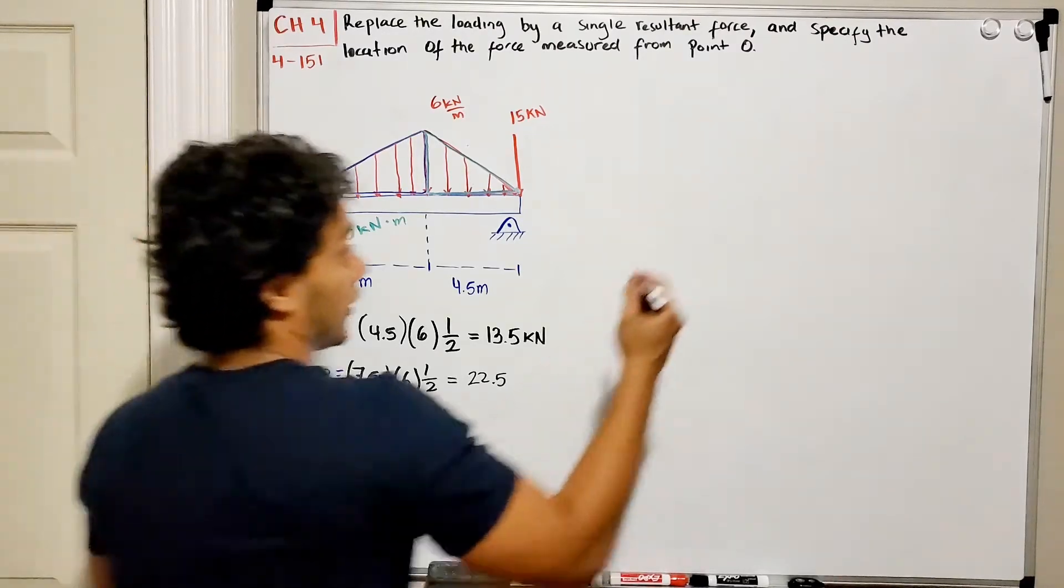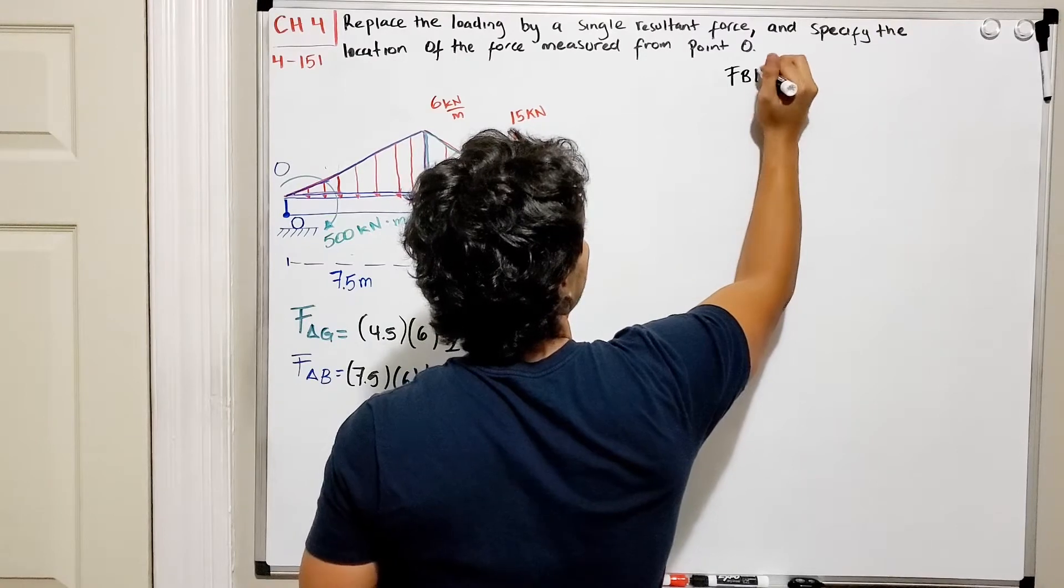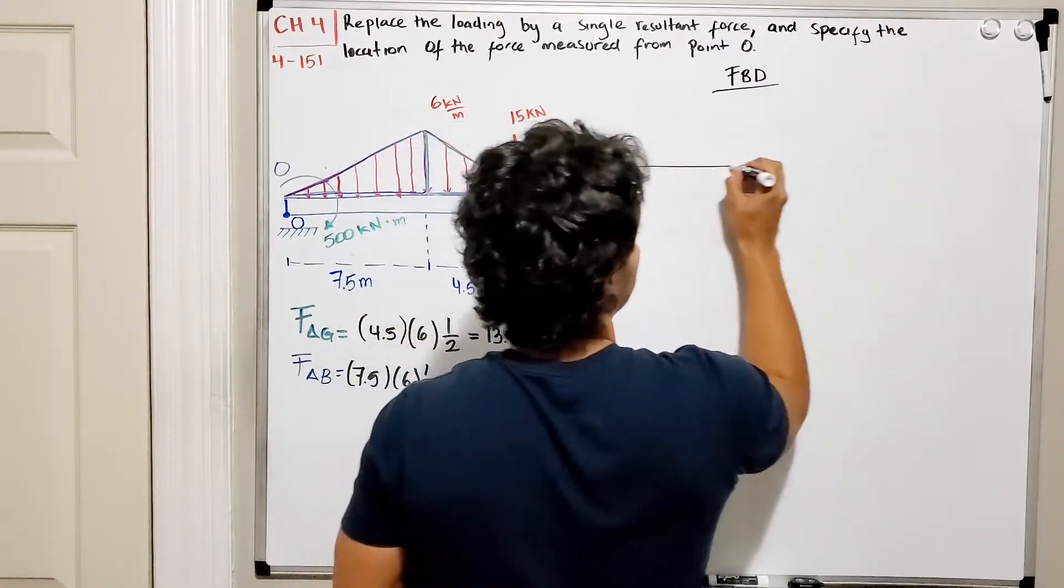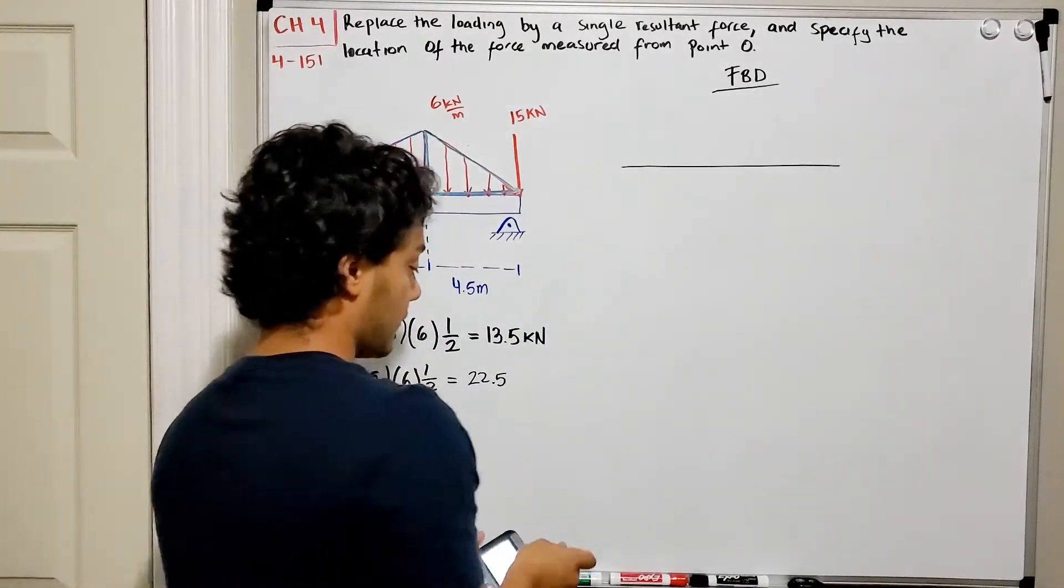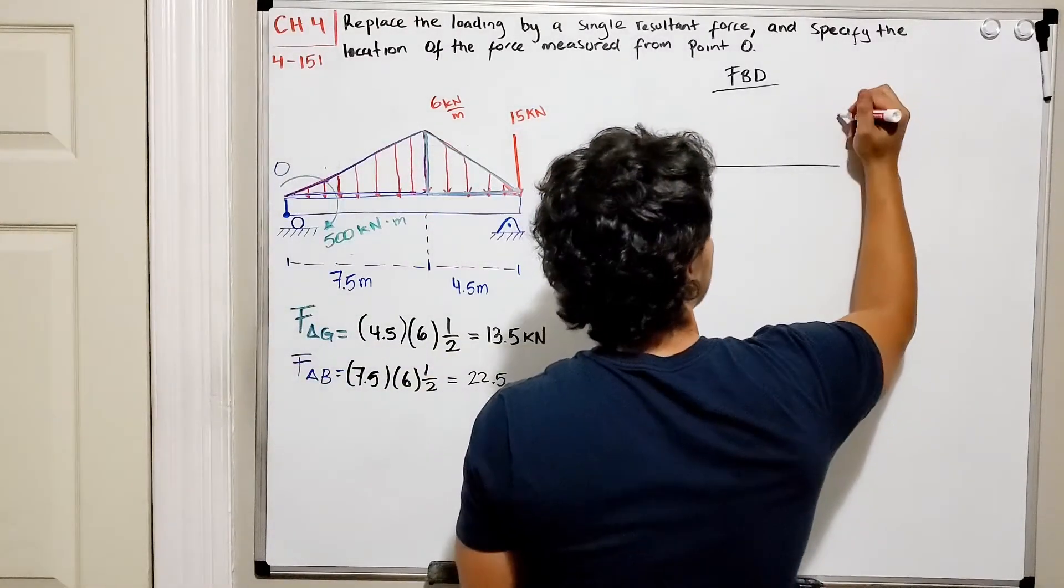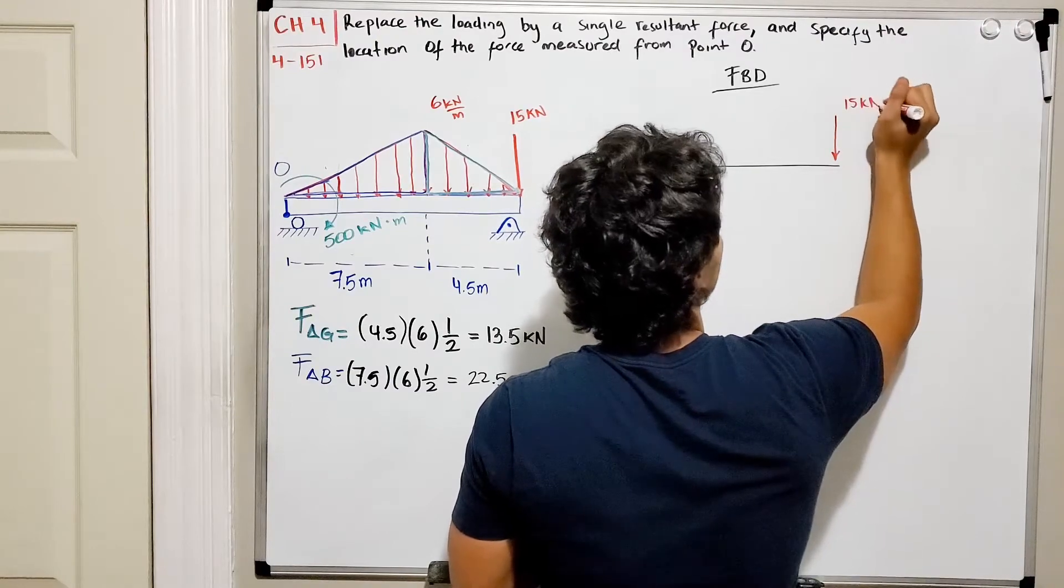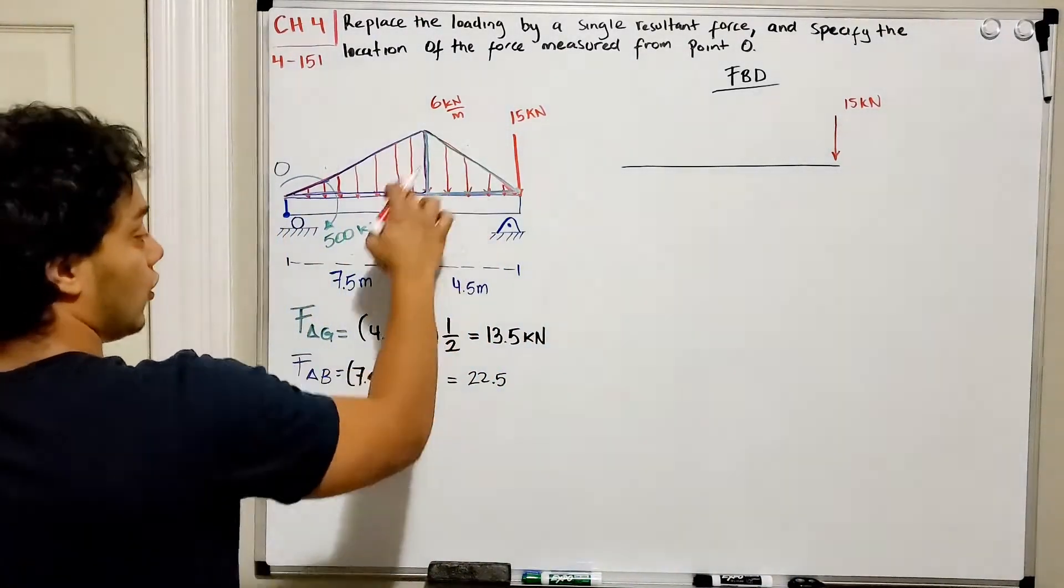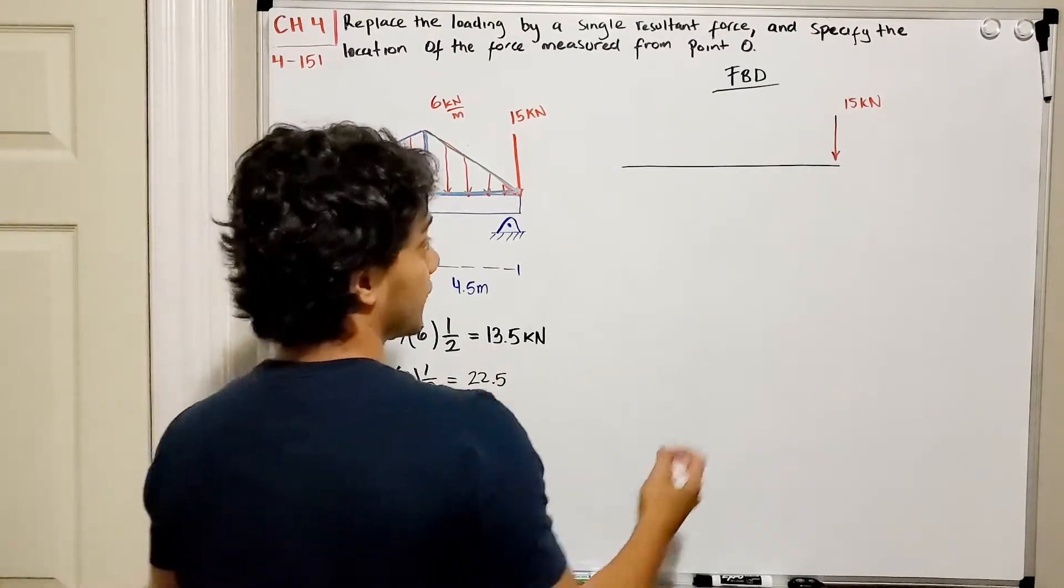I'm going to redraw our FBD, so free body diagram. We will have our beam really similar like this. Now I have my 15 kN in this position.